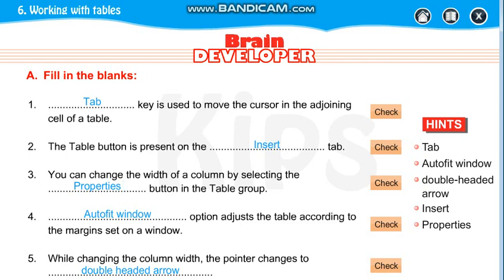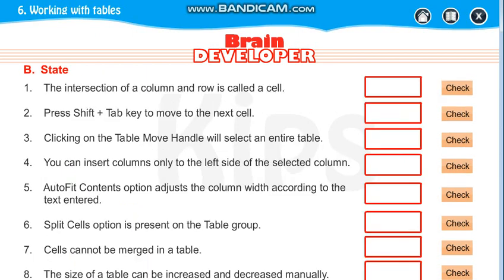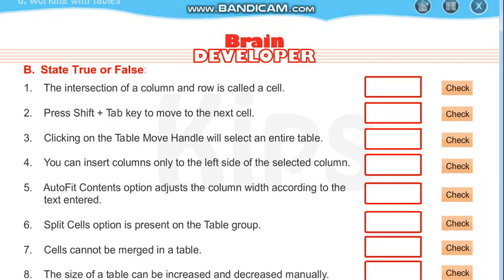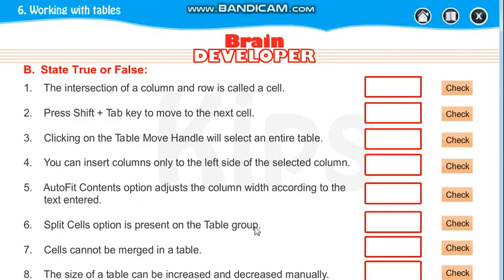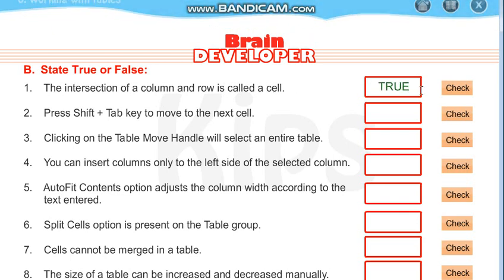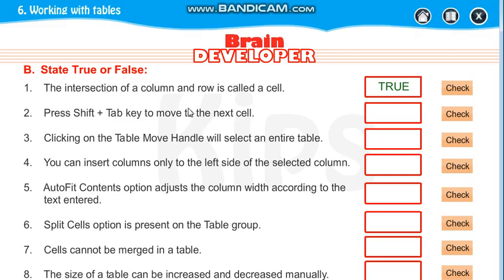Now we will go to the next section: True or False. The intersection of the column and row is called a cell — True. Press Shift plus Tab key to move to the next cell — False.